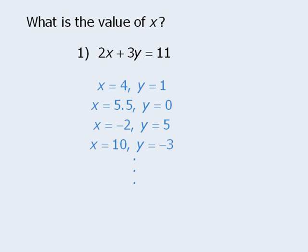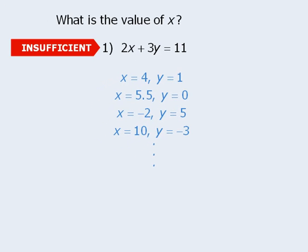Here are just a few of those solutions. So x could equal 4, it could equal 5.5, negative 2, and so on. Since we cannot determine the value of x with any certainty, statement 1 is not sufficient.